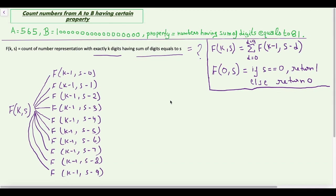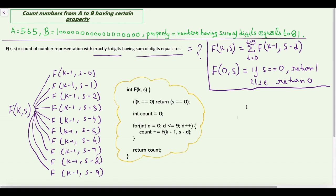Our code of f(k, s) will be something like this. If you already know recursion and how to find time complexity, you can see that the time complexity of this recursive function will be O(10^k), which is also not feasible for larger k.